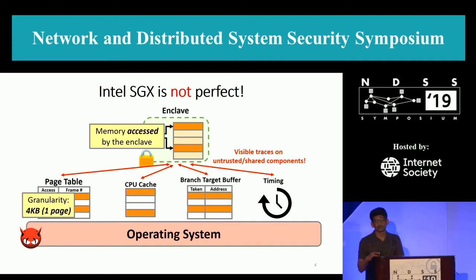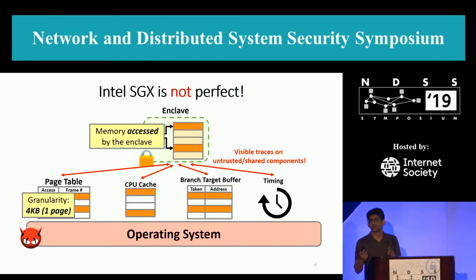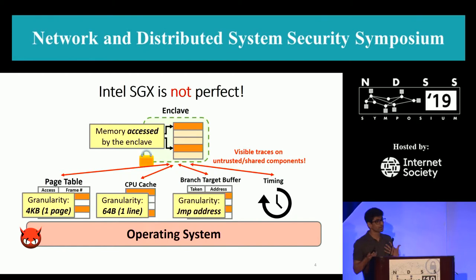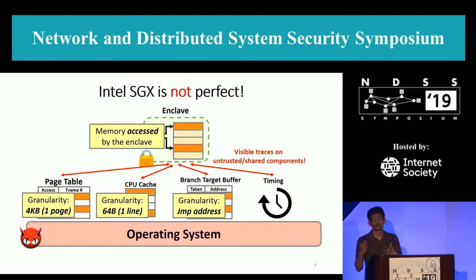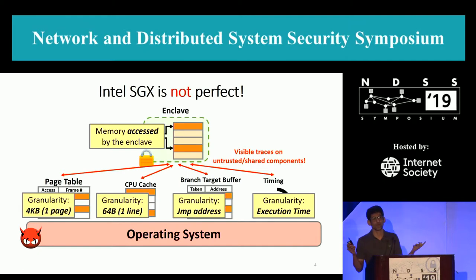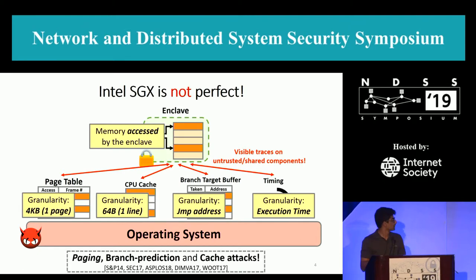The operating system, being so powerful, can look into all of this. With a page table attack, you can figure out up to the granularity of each single page what was accessed by the enclave. The CPU cache has a granularity of 64 bytes — one cache line — so up to 64 bytes you can figure out what the enclave accessed. The branch target buffer stores each source and destination of branches, so you can figure out whatever branches were taken. And timing — the execution time of the program — would also leak some information.